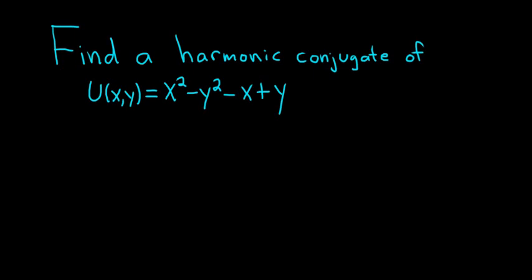Find a harmonic conjugate of u of xy equals x squared minus y squared minus x plus y. Let's go ahead and work it out. Solution.